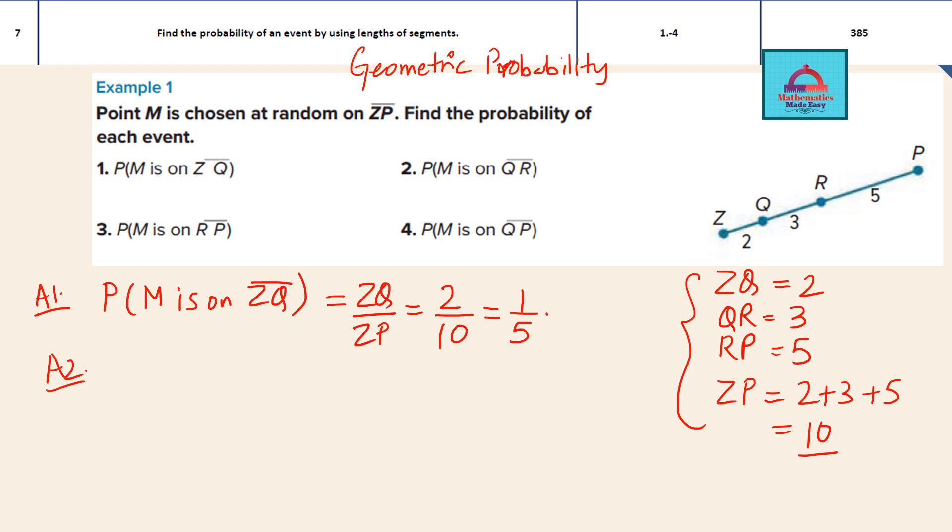Let's do another one, question 2. So here you have to find the probability that M is on QR. So let's go to QR. QR is how much length? 3. So I'm going to divide this QR with the total length ZP. So this is going to be 3 over 10. That's the answer. So easy.